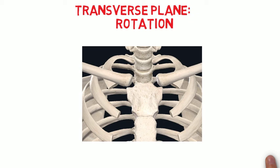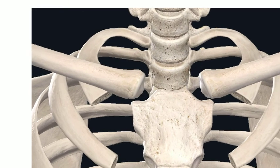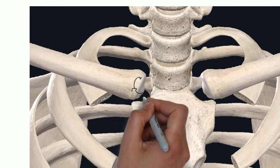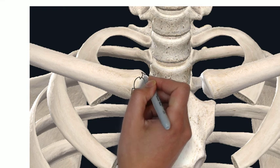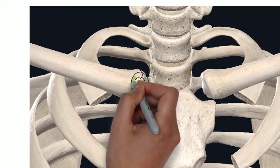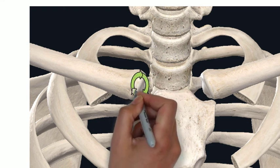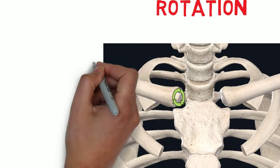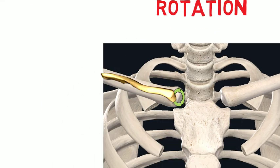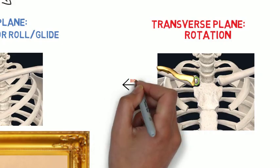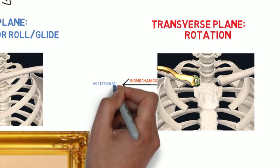And finally, let's take a look at the arthrokinematics in the transverse plane. This is probably the simplest mechanics to understand because there is no roll or glide. The clavicle simply spins around its longitudinal axis. So with upper extremity elevation, the clavicle spins in the posterior direction along its longitudinal axis.